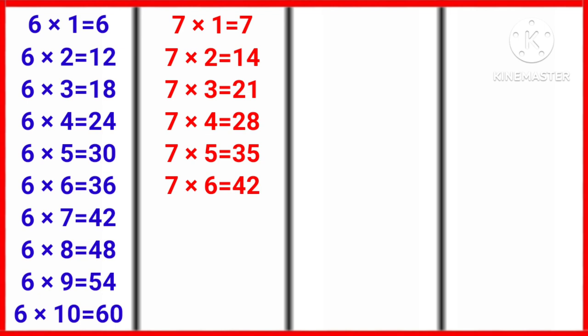7 6s are 42, 7 7s are 49, 7 8s are 56, 7 9s are 63, 7 10s are 70. Now let's move on to the next table.